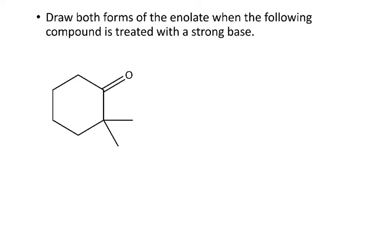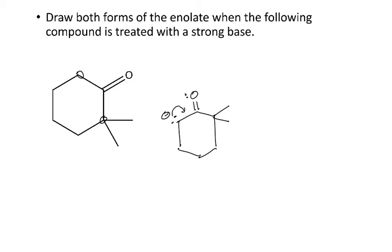To finish with an example: draw both forms of the enolate when a compound is treated with strong base. First, identify the alpha carbons. The base must deprotonate an alpha carbon that has protons — one alpha carbon has no protons, so the only choice is to deprotonate the other alpha carbon. The first form of the enolate shows the negative charge on that carbon, and then the other resonance structure shows the charge delocalized onto the oxygen.